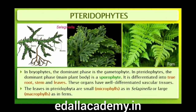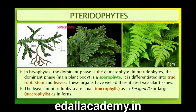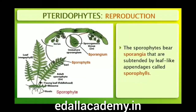In bryophytes, the dominant phase in the life cycle is the gametophytic plant body. However, in pteridophytes, the main plant body is a sporophyte, which is differentiated into true root, stem, and leaves. These organs possess well-differentiated vascular tissues. The leaves in pteridophytes are small microphylls, as in Selaginella, or large macrophylls, as in ferns.